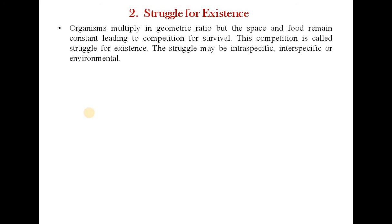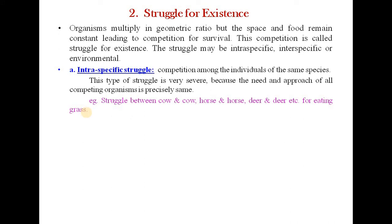Organisms multiply in geometric ratio but space and food remain constant, leading to competition for survival. This competition is called struggle for existence. The struggle may be intraspecific, interspecific, or environmental. Intraspecific struggle is competition among the individuals of the same species. This type of struggle is very severe because the needs and approaches of all competing organisms are precisely the same — for example, struggle between cow and cow, horse and horse, deer and deer for eating the grass.